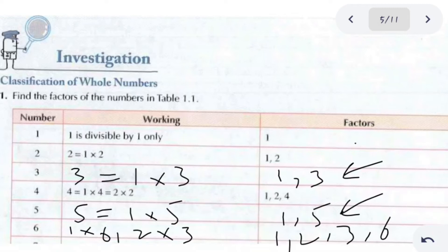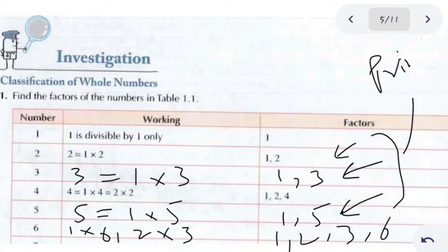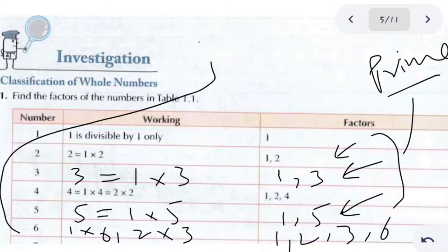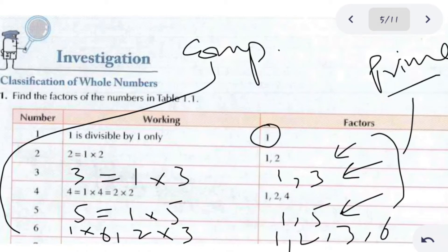We can see that 2, 3, and 5 are prime numbers because they each have only two factors. The number 6 is a composite number because it has more than two factors. The number 1 is neither a prime number nor a composite number.